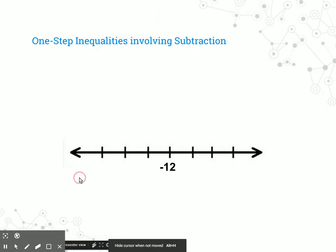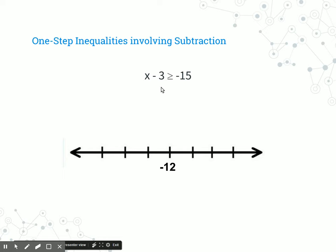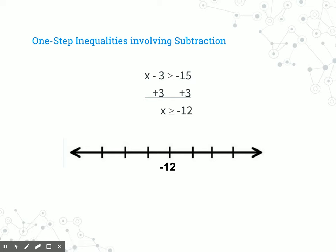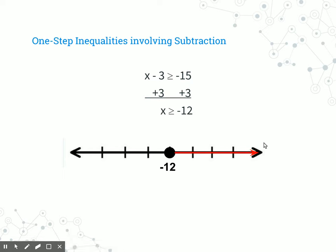Same problem as before with equations, but the variable's on the left side and it's subtracting by 3, so the opposite of subtracting 3 would be to add 3. This one tells us x is greater than or equal to negative 12. Since it has that greater than or equal to sign, you put a solid dot, and the arrow is pointing to the right, meaning all the numbers to the right are going to be greater than or equal to negative 12.